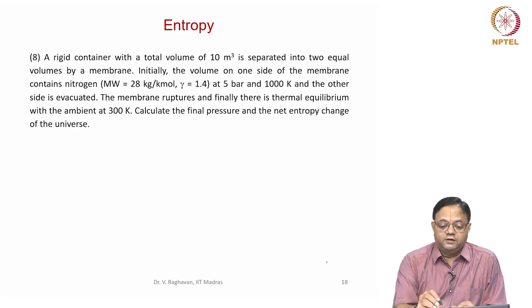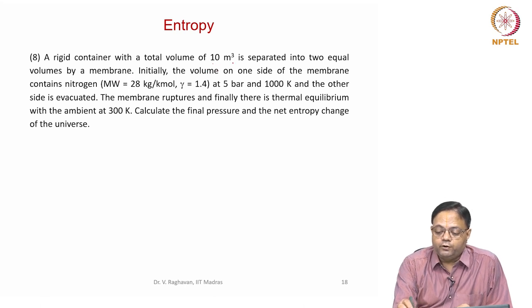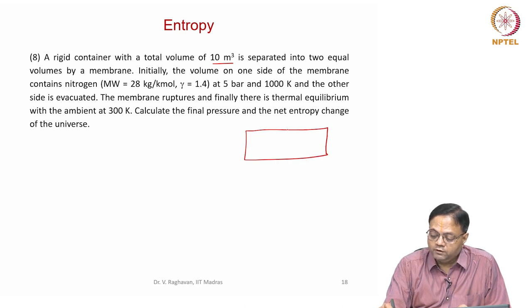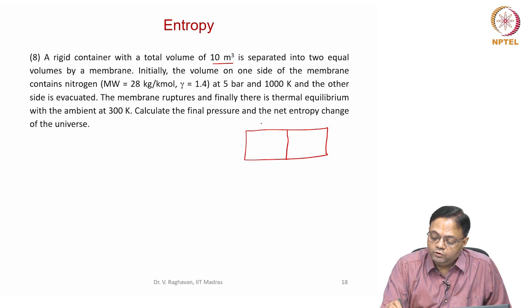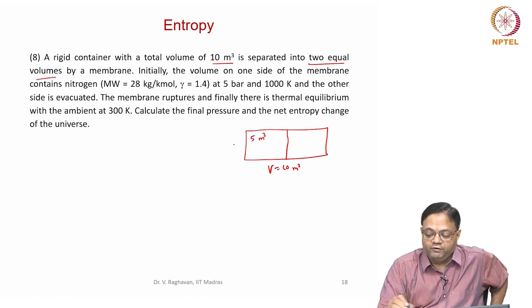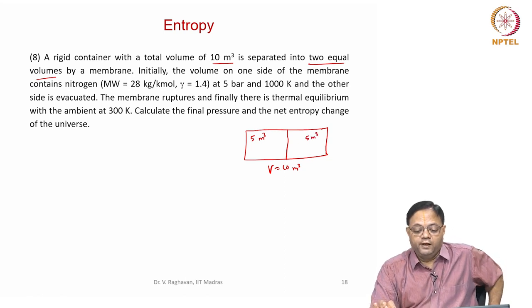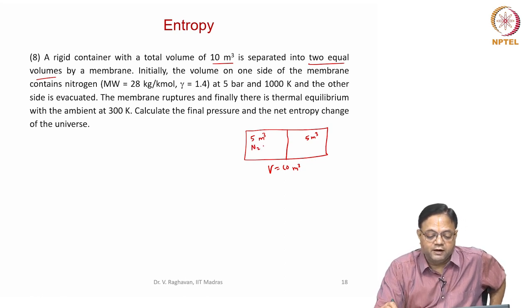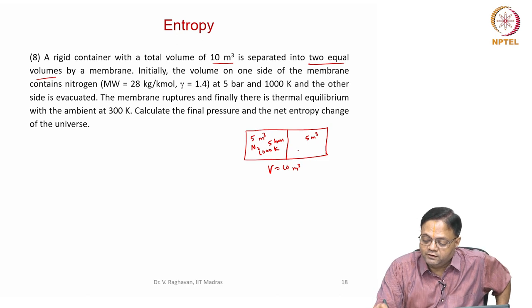Next problem: a rigid container with a total volume of 10 cubic meters is separated into two equal volumes by a membrane. So let us draw this — that is a membrane. This is totally V equal to 10 cubic meters. Equal volumes means the first state will be 5 cubic meters on each side. Initially, the volume on one side contains nitrogen at 5 bar and 1000 Kelvin, and the other side is evacuated — nothing is there.